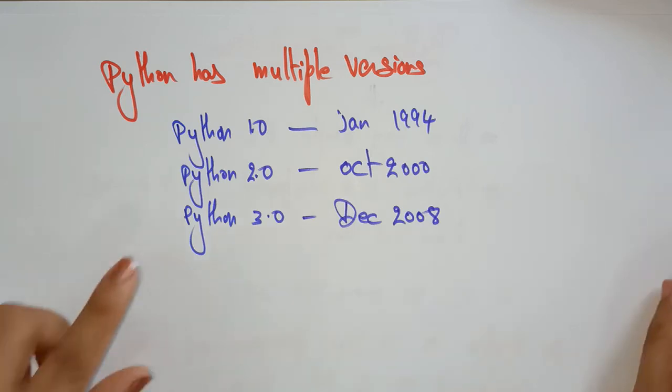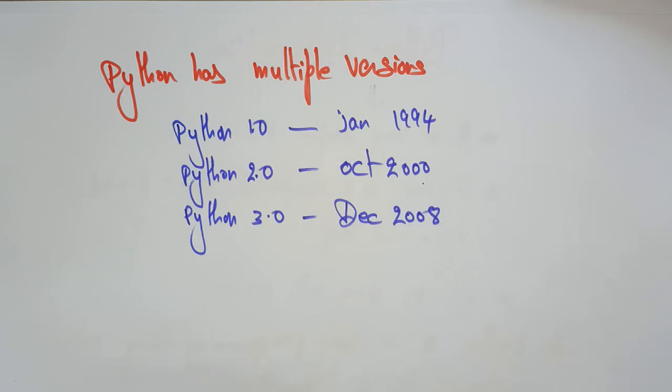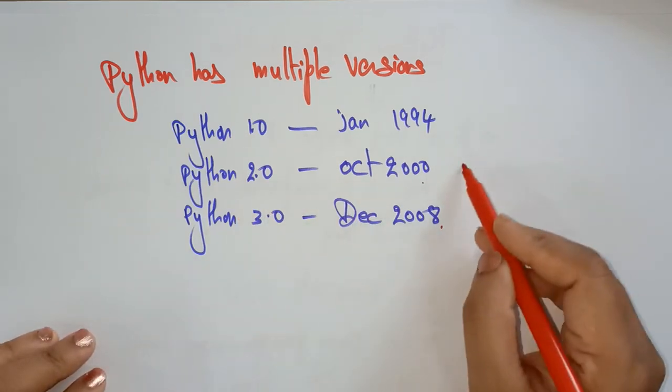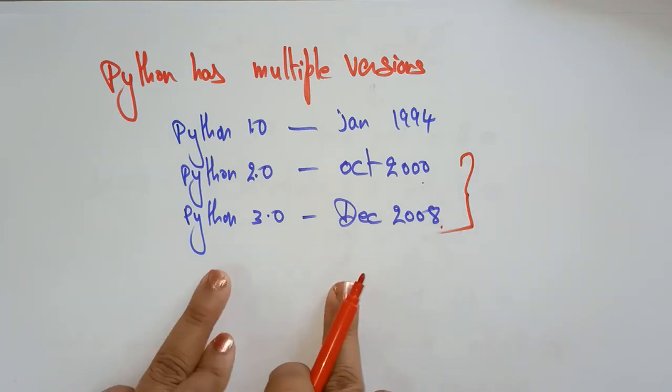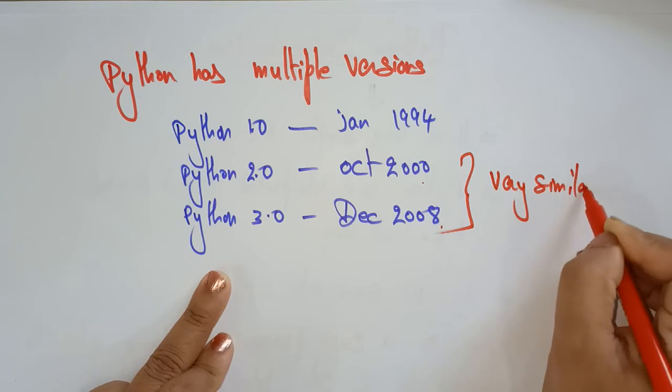Python 2.0 was released in 2000. And the later versions were previously released until December 2008. The Python 2.0 as well as the Python 3.0 are very similar. It's almost very similar.